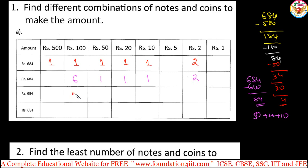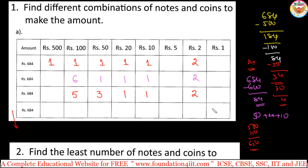Yet another combination: take 5 notes of 100 rupees, making 500. Then take 3 notes of 50 rupees, which is 150, totalling 650. We need 684, so 34 more is required. Take 1 note of 20 and 1 note of 10, making 30, leaving 4 again. There are many ways we can make the same amount. I am providing worksheets with different numbers so you can prepare and practice multiple combinations.